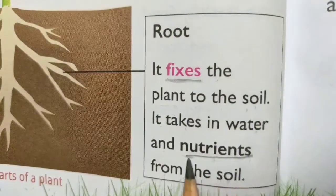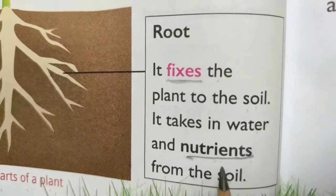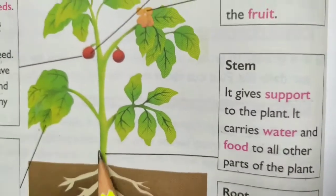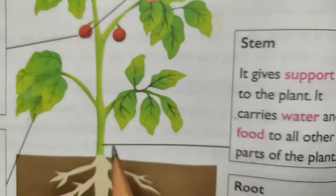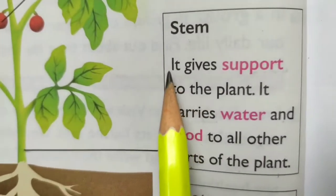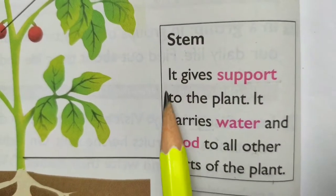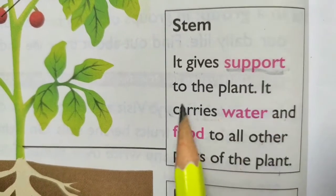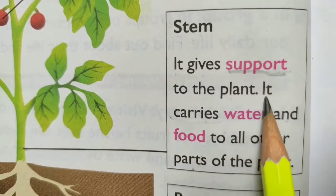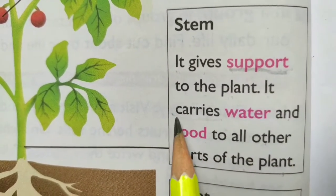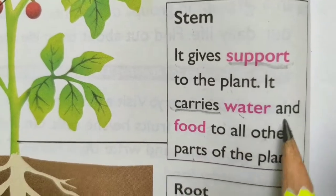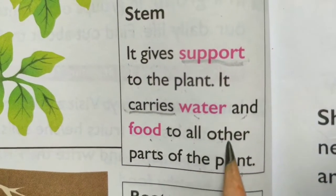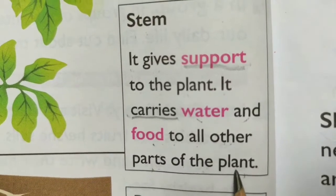Nutrient — learn the spelling of nutrients. Stem. It gives support to the plant. It carries water and food to all other parts of the plant.